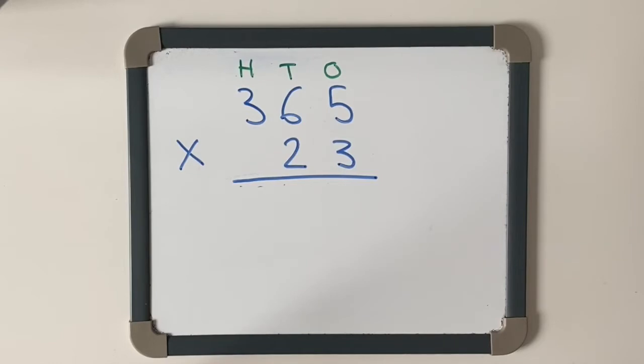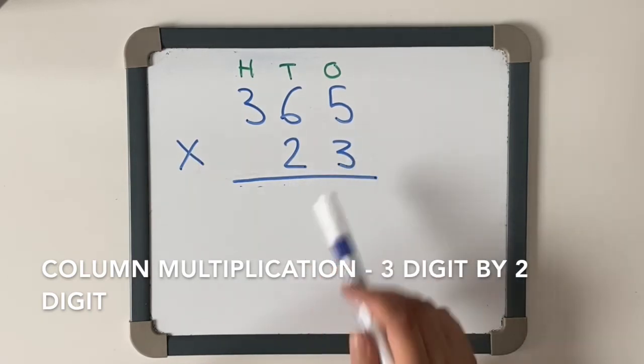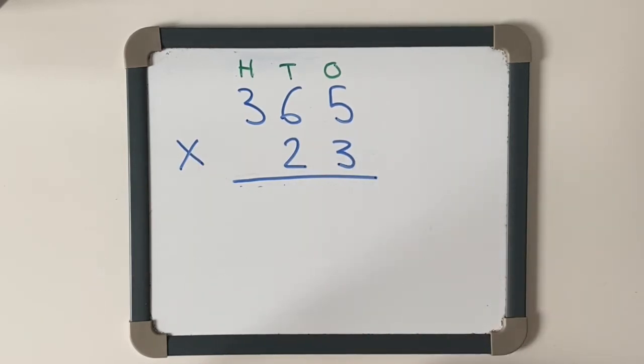In this session we're going to focus on column multiplication - three digit by two digit. As you can see, I have already separated it into hundreds, tens, and ones columns, and now we're going to go through step by step how to solve this calculation.